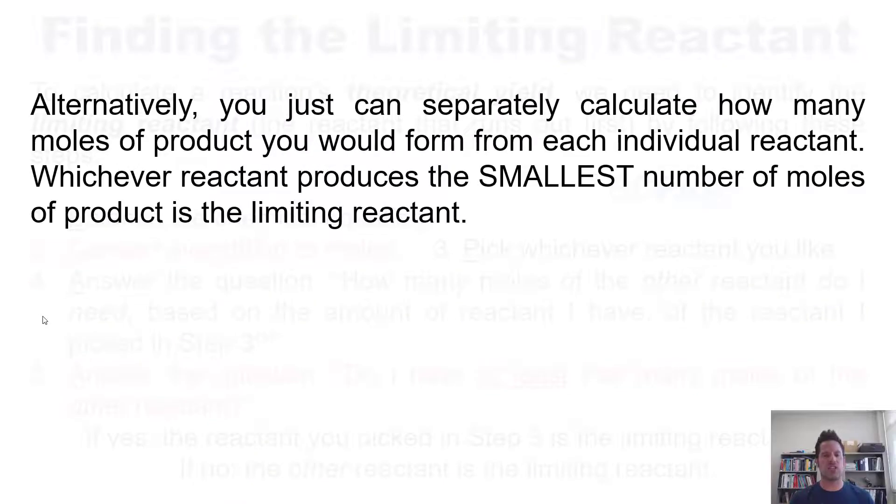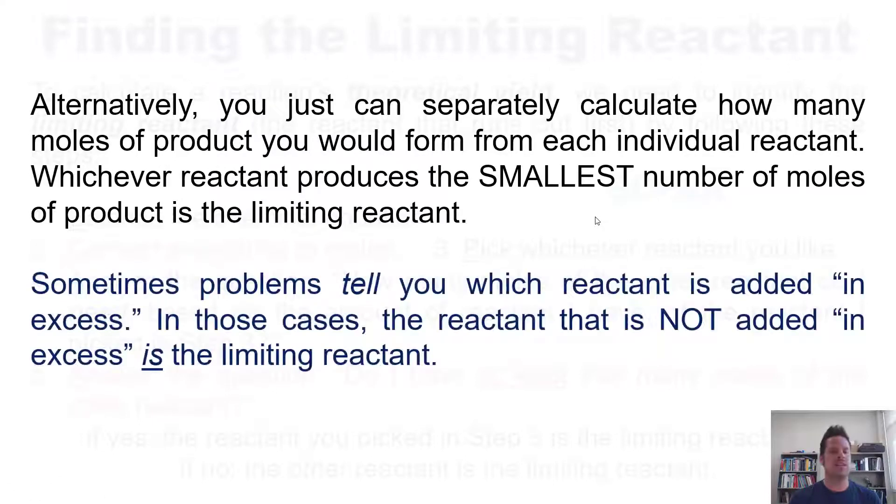In other words, you could alternatively just separately calculate how many moles of product you would form from each individual reactant. Whichever reactant produces the smallest number of moles of product is the limiting reactant, the one that would run out first. Now, as an important detail, sometimes your problem that you're given, if you're working out a limiting reactant problem, tells you which reactant is added in excess. If you're in that type of scenario, then whichever reactant is not added in excess is the limiting reactant.